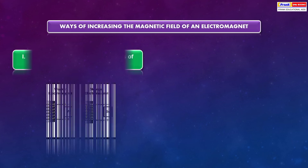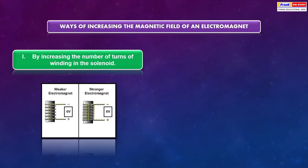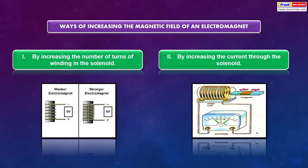Ways of increasing the magnetic field of an electromagnet: It can be done by increasing the number of turns of winding in a solenoid. It can also be done by increasing the current through the solenoid.